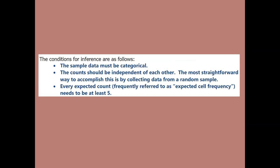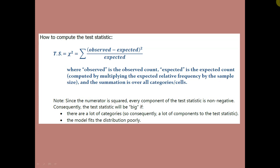The conditions for inference: firstly, you have to have categorical data — which in a way goes without saying, but it does need to be stated. The second thing is that you want the counts to be independent of each other. The easiest way to make that happen is to take a random sample. The third thing: all of the expected counts, or expected cell frequencies — those terms are interchangeable — need to be at least five. This is similar to the success-failure condition for proportions in Chapter 6, where we need the number of successes and failures to both be at least 10.